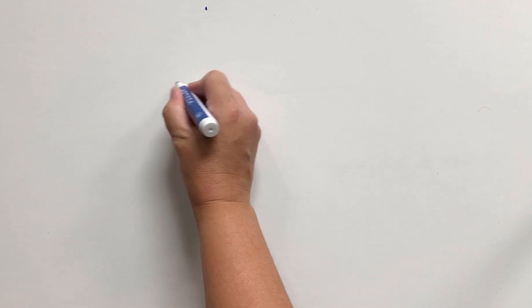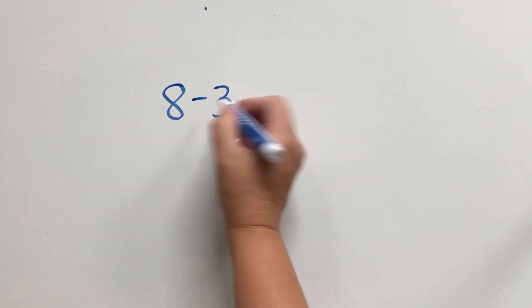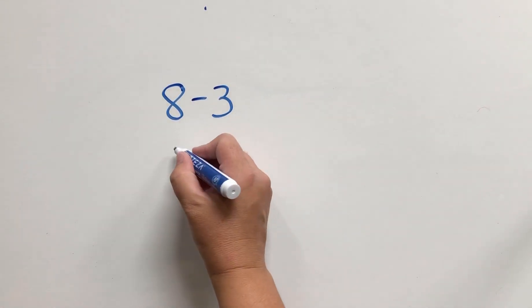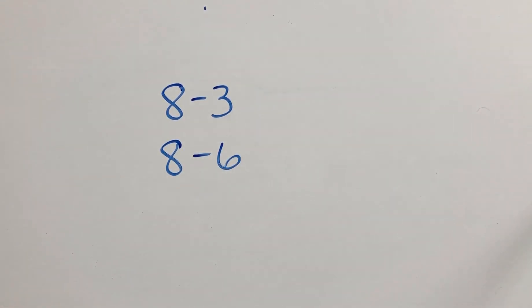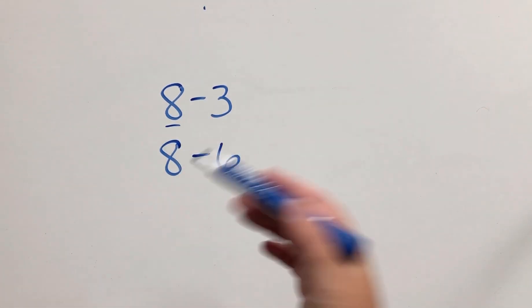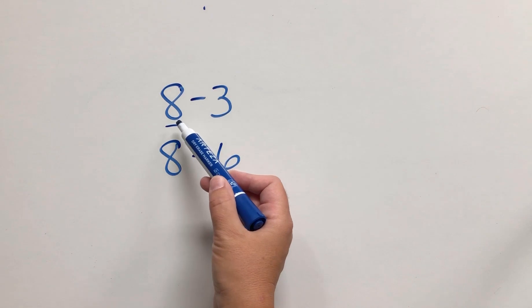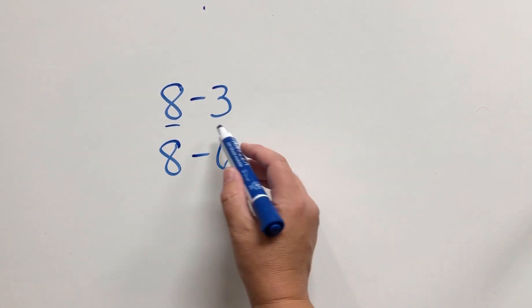All right, let's talk about counting back and counting up for subtraction. Counting up and counting back are two different but related strategies. Counting back is when we start with the bigger number and we just count back. For example, eight, seven, six, five—we're counting back by three and we get a difference of five.